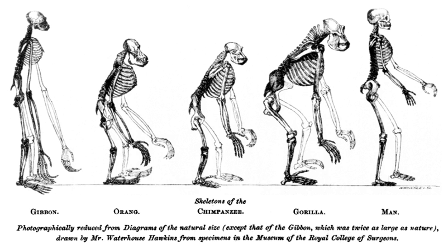Richard Levins introduced his model of the specialization of species in 1968, which investigated how habitat specialization evolved within heterogeneous environments using the fitness sets an organism or species possesses. This model developed the concept of spatial scales in specific environments, defining fine-grained spatial scales and coarse-grained spatial scales.